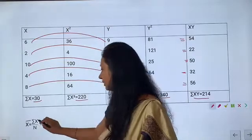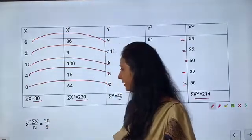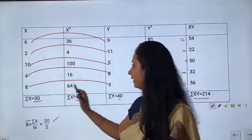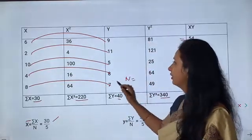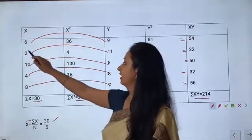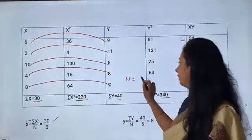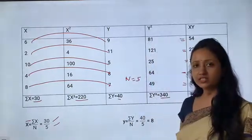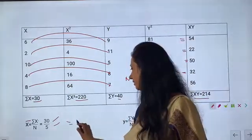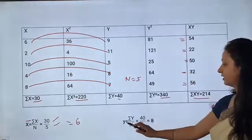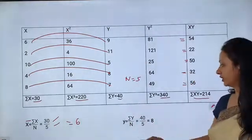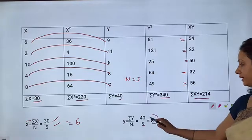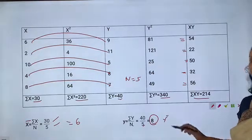Next we will calculate x̄ and ȳ. x̄ = Σx/n = 30/5 = 6. Σy = 40 divided by n=5 equals 8. This is our ȳ.